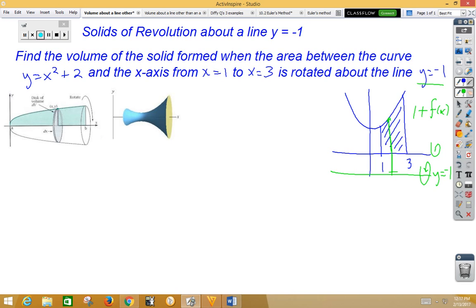So our setup here—and again, our solid of revolution will look like this only lower now—we would have π from 1 to 3 of (1 + x² + 2)² dx. Remember, πr².